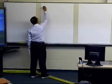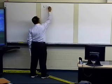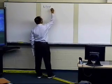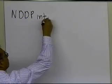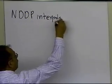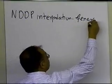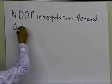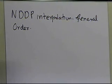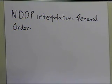In this segment, we're going to talk about Newton's Divided Difference Polynomial method of interpolation for the general order. In previous segments, we talked about linear interpolation and quadratic polynomial interpolation done by Newton's Divided Difference Polynomial. Now we want to figure out how to do a general order Newton's Divided Difference Polynomial interpolation.